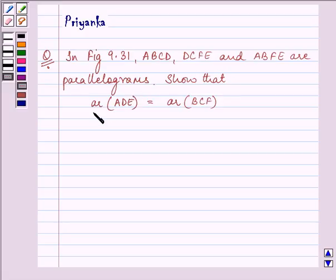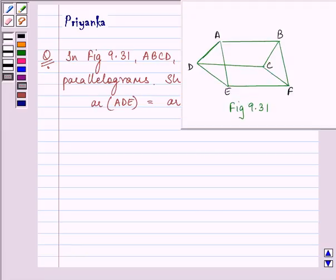Show that area of triangle ADE is equal to area of BCF. Now this is the figure which we need to refer. Here ABCD, DCFE, and ABFE are given to us as parallelograms.